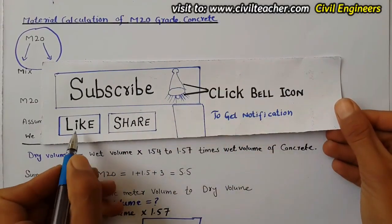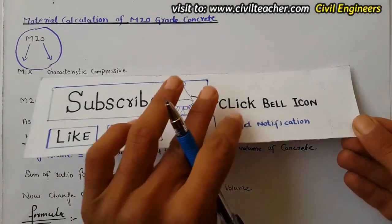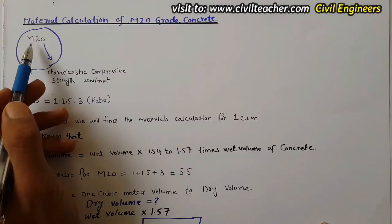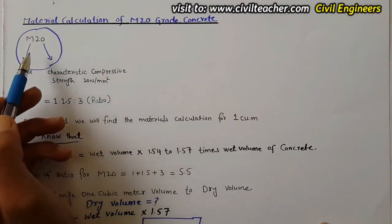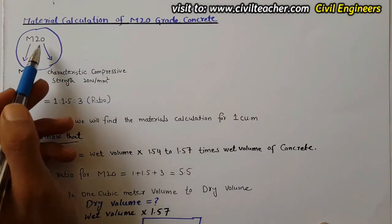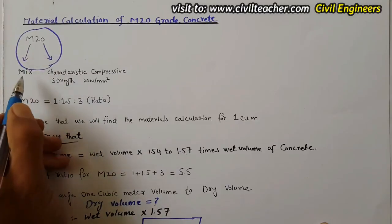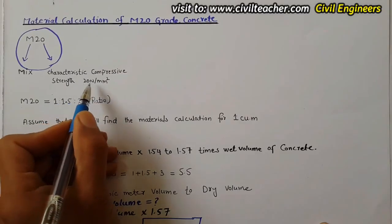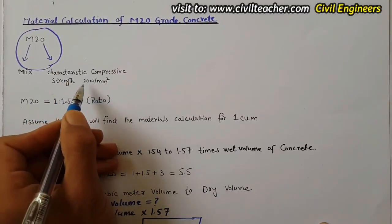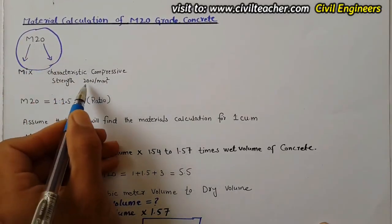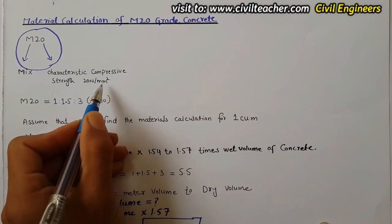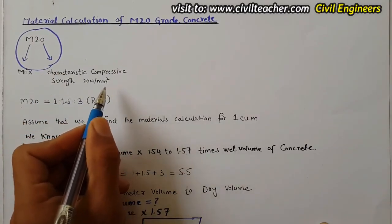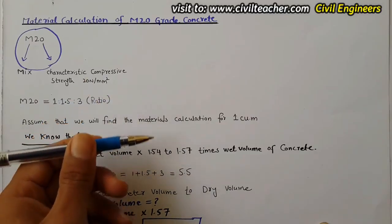Don't forget to like and share this video. Let's start. The grade of concrete we have here is M20. M stands for mix, and 20 is the characteristic compressive strength of concrete after 28 days — that is 20 Newton per mm² compressive strength after 28 days.